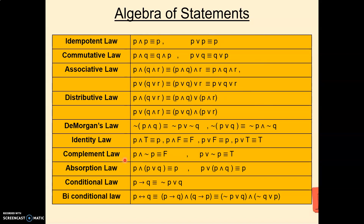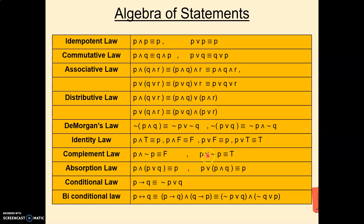Next is the Complement law. P∧¬P is equivalent to F. If P is true, T∧F = F. If P is false, F∧T = F. So in both cases the answer is false. And P∨¬P is equivalent to T. If P is true, T∨F = T. If P is false, F∨T = T. So in both cases the answer is true.